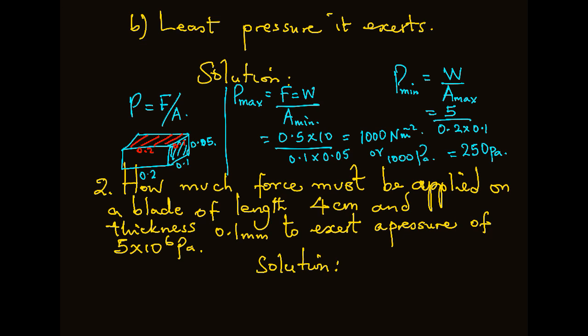Example 2. How much force must be applied on a blade of length 4 centimeters and thickness 0.1 millimeters to exert a pressure of 5 times 10 raised to power 6 Pascals? So we have been given the dimensions of the blade, 4 centimeters and 0.1 millimeters. To determine the pressure to its SI units, we have to convert the dimensions to the SI unit of length. So we start by converting 4 centimeters is equivalent to 0.04 meters. 0.1 millimeters is equal to 0.1 over 1000 meters.